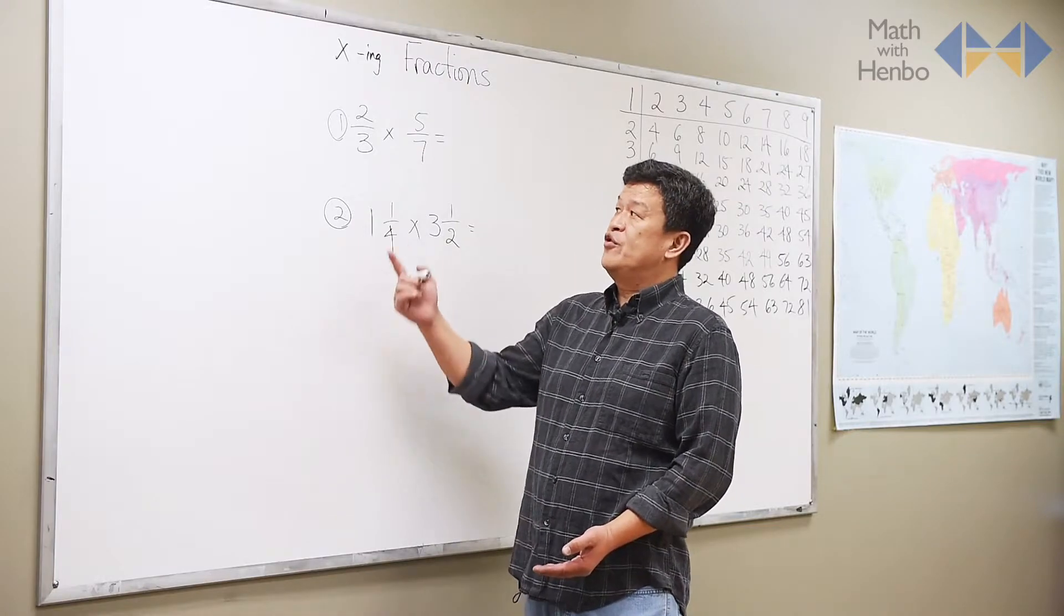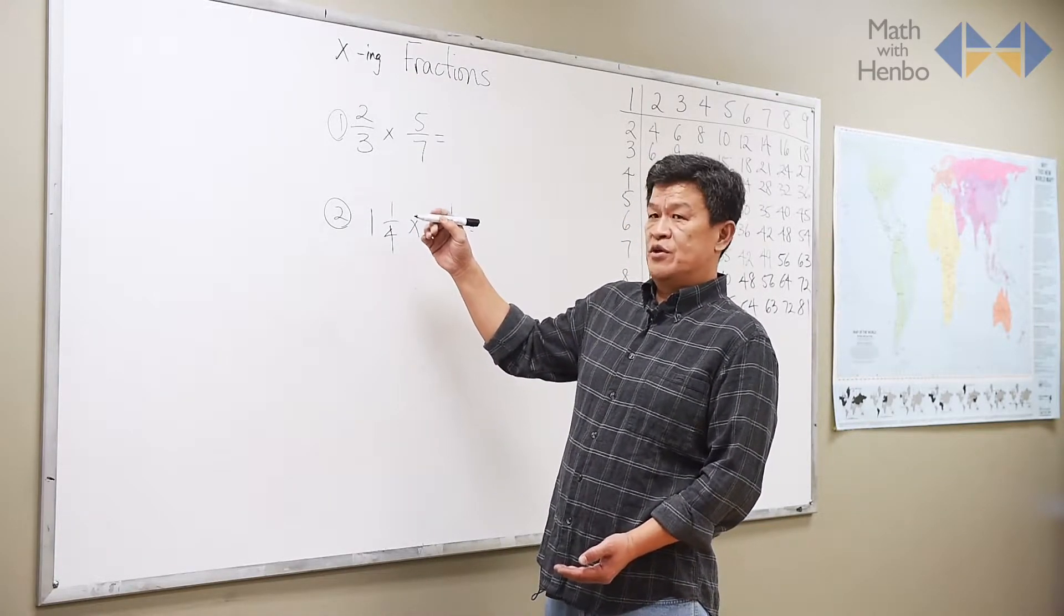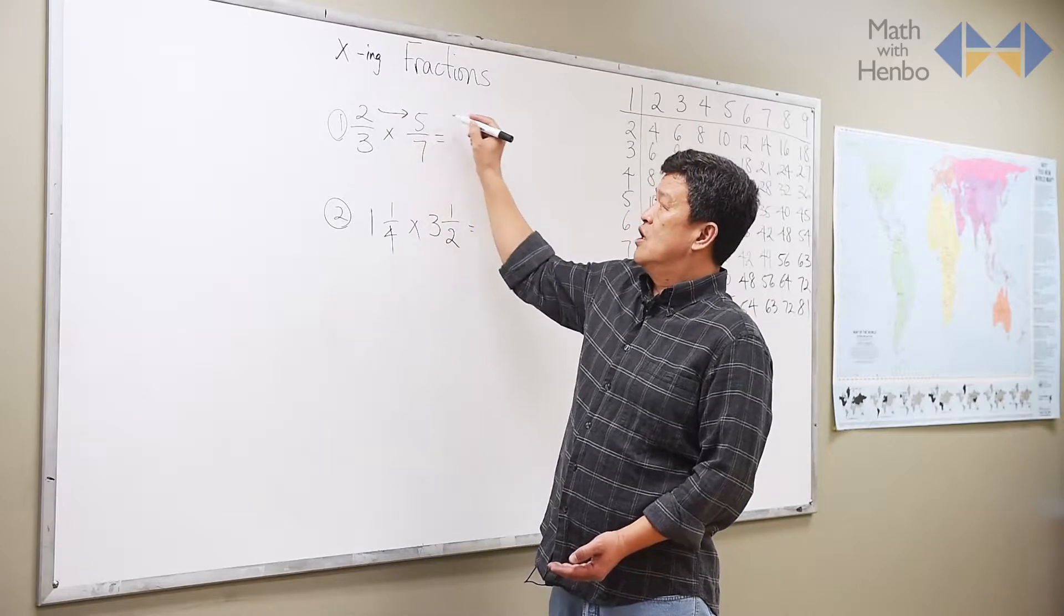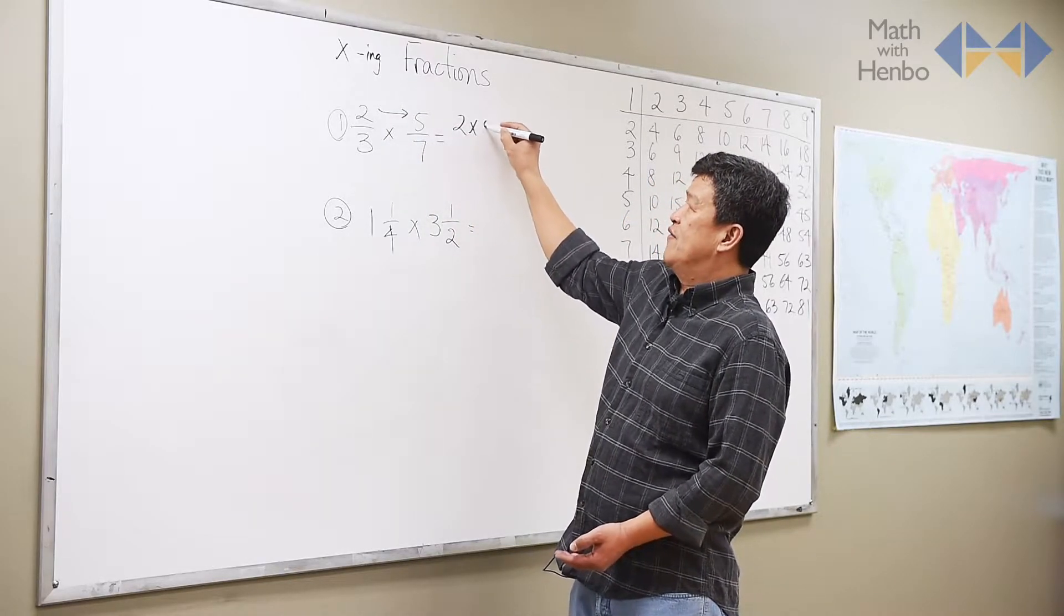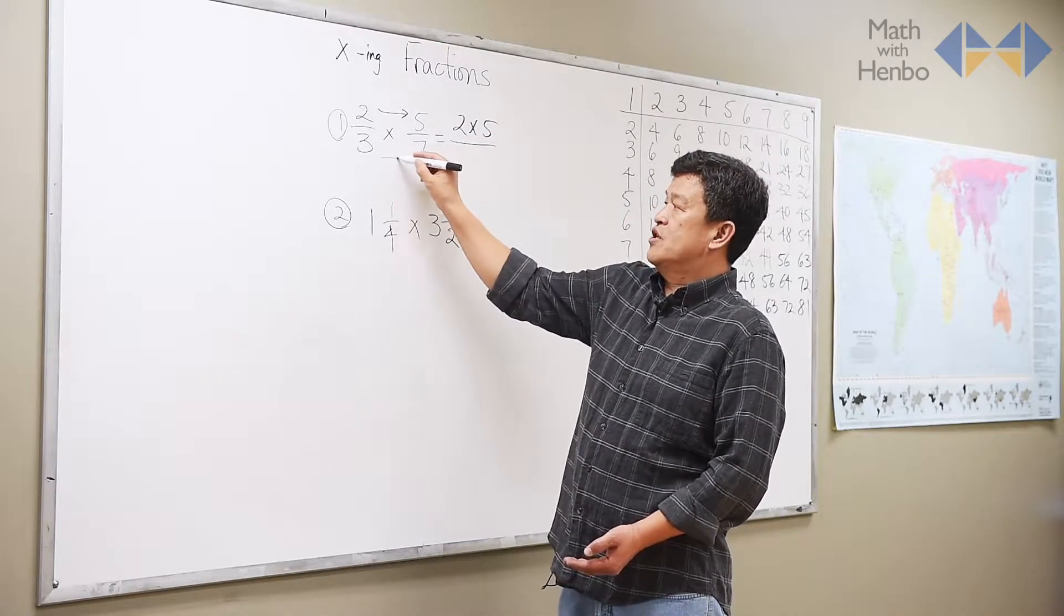Let's say we have 2 thirds times 5 seventh. All you have to do is go across. Top, therefore, is 2 times 5, and the bottom is 3 times 7.